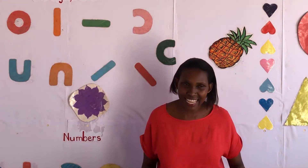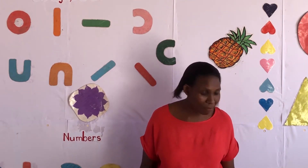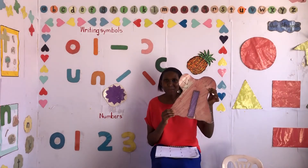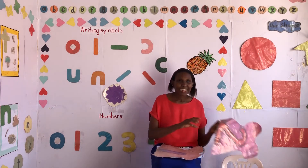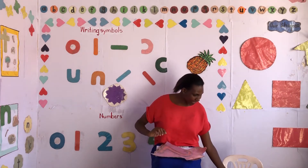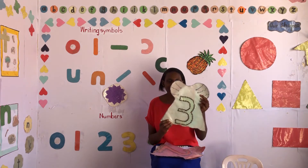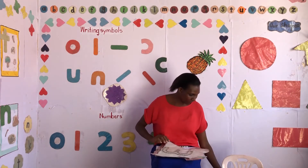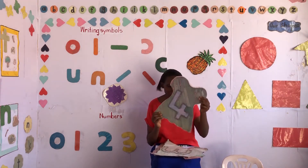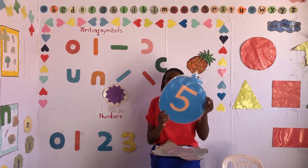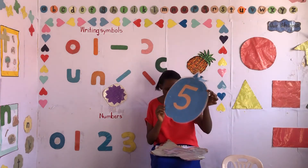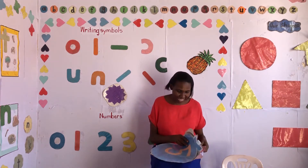Now we are going to sing again for our numbers from one up to number five. Here is number one, number one. Number two, number two, number two. Number three, number three, number three. Number four, number four, number four. Number five — repeat after me — number five, number five, number five.